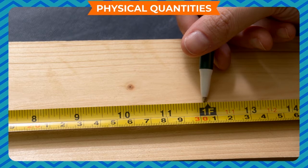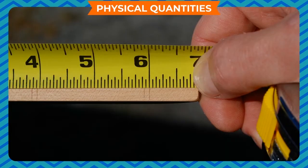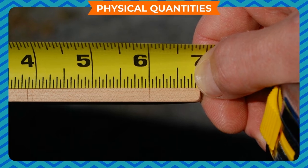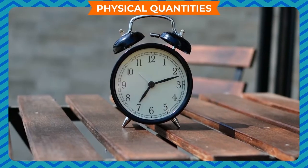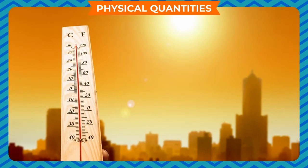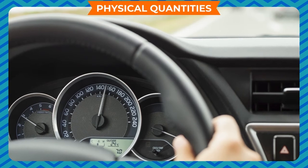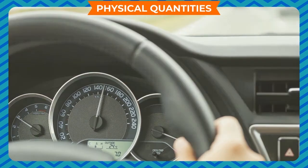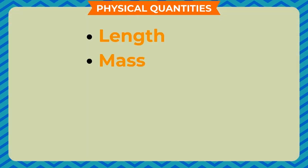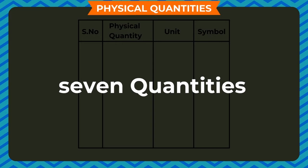Physical Quantities. Think of different things you measure in your daily life. You generally measure the length of a line segment, time during the day, mass of vegetables bought from the market, temperature during the day to know how hot or cold it is, speed of the car you are travelling in, etc. Quantities like length, mass, time, temperature, and speed that can be measured are called physical quantities. There are 7 fundamental physical quantities, and all other quantities are derived from these.